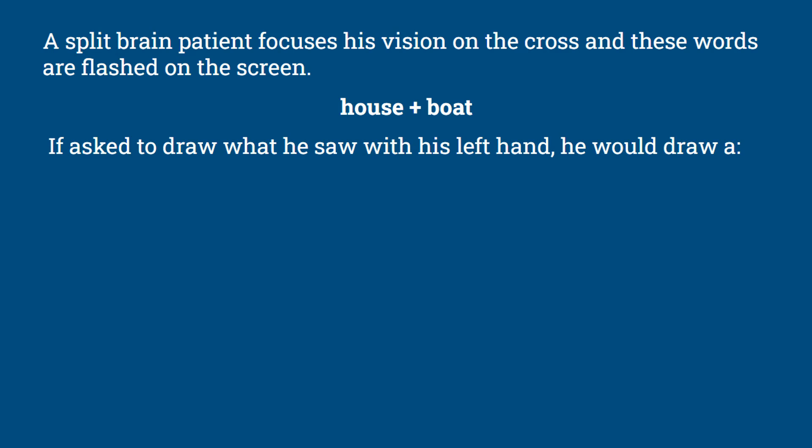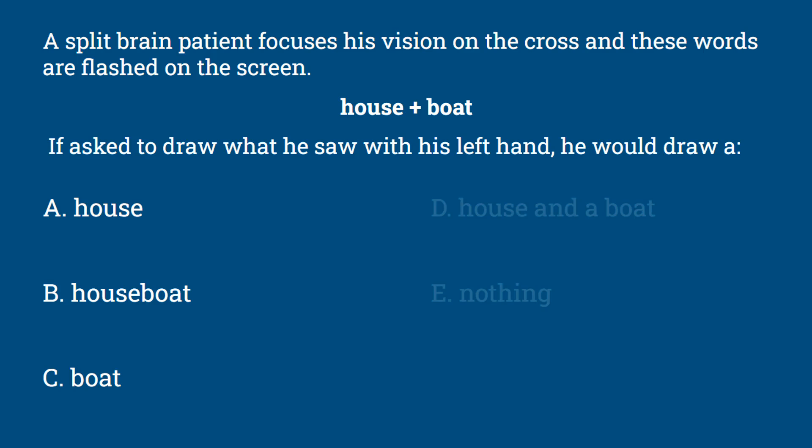Question 8: A split-brain patient focuses his vision on the cross, and these words are flashed on the screen: the word 'house' on the left, then 'cross' at center, then the word 'boat' on the right. If asked to draw what he saw with his left hand, he would draw — a house, a houseboat, a boat, a house and a boat, or nothing?